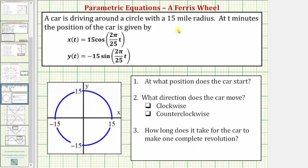A car is driving around a circle with a 15 mile radius. At t minutes, the position of the car is given by the parametric equations.